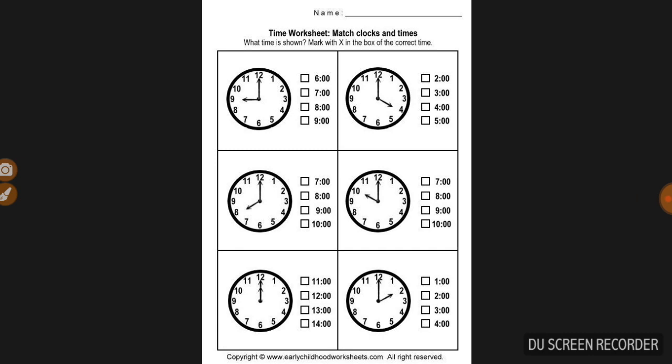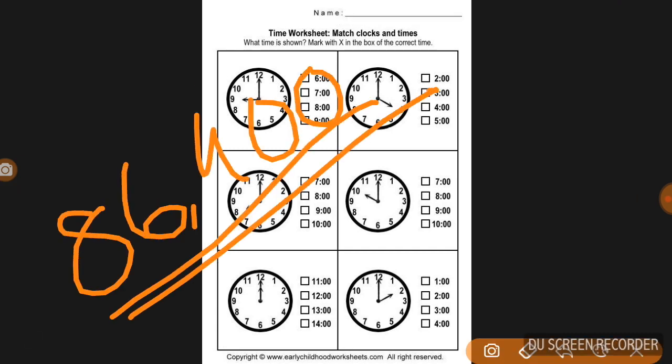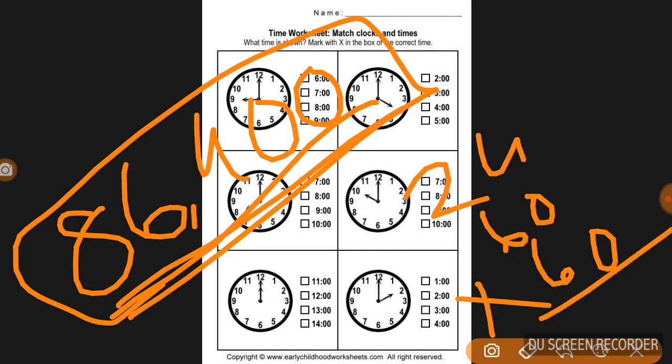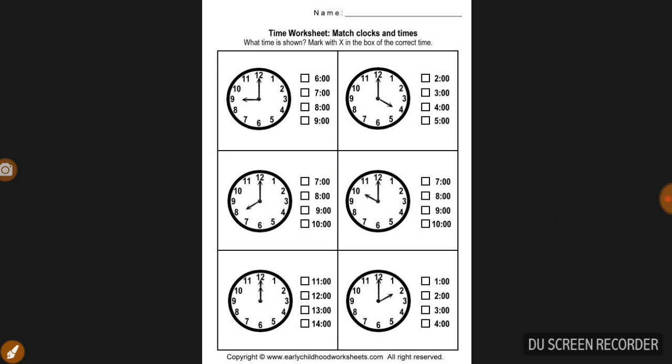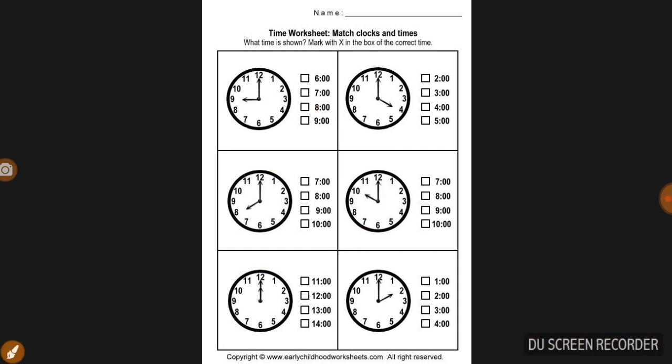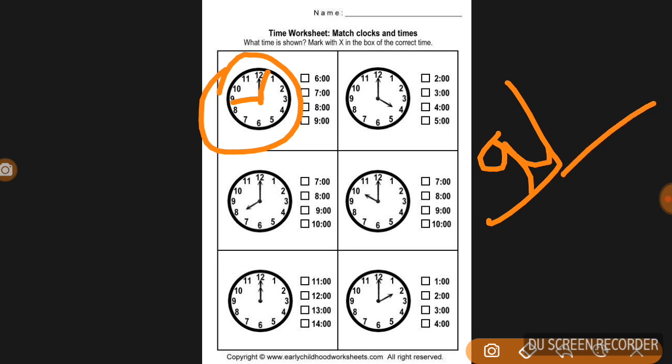This is a competitive exam topic where you need to understand how clocks work. A complete circle of the clock contains 360 degrees. When the minute hand and hour hand rotate, they form angles. The minute hand and hour hand move around, creating 90-degree angles and various positions.